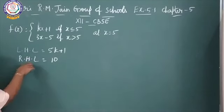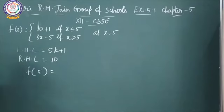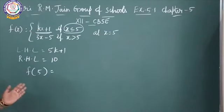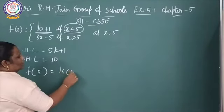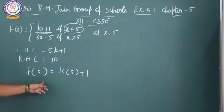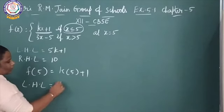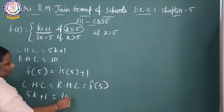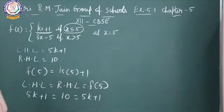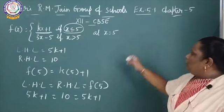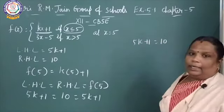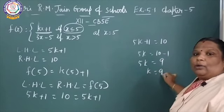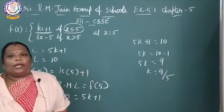Left hand limit equal to right hand limit equal to f of 5. f of a equals k into 5 plus 1, so 5k plus 1. Setting left hand limit equal to right hand limit equal to f of 5: 5k plus 1 equal to 10 equal to 5k plus 1. Solving: 5k equal to 10 minus 1, so 5k equal to 9, therefore k equal to 9 by 5.